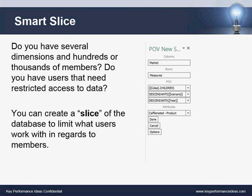The next feature is Smart Slices. If you have several dimensions, hundreds of thousands of members, or users whose access needs to be restricted, you can create a slice of the database to limit what users work with in terms of members. Smart Slices can be named and saved in the Smart View panel for all users to access. This is helpful for guiding users who may not be familiar with where their data is stored — you give them their slice of the database and they can use that to query.